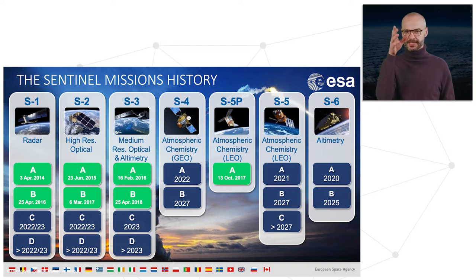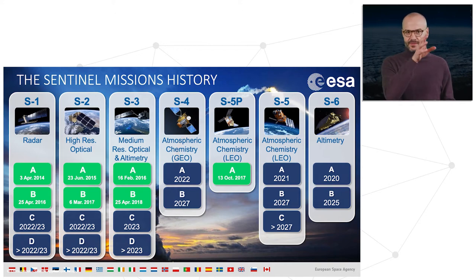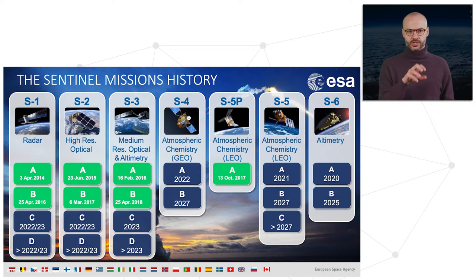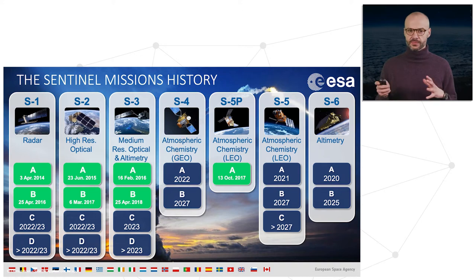The Sentinel missions are part of the whole concept from the European Space Agency, also called Copernicus. There are different sensors named with numbers from Sentinel-1 to Sentinel-6, each with different technology such as radar, optical, atmospheric, altimetry, and so on.